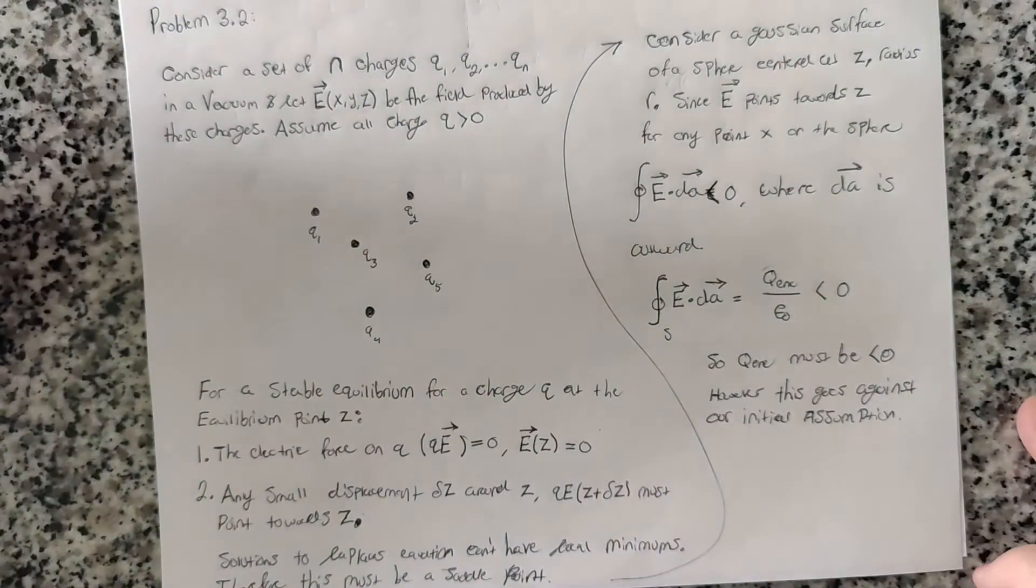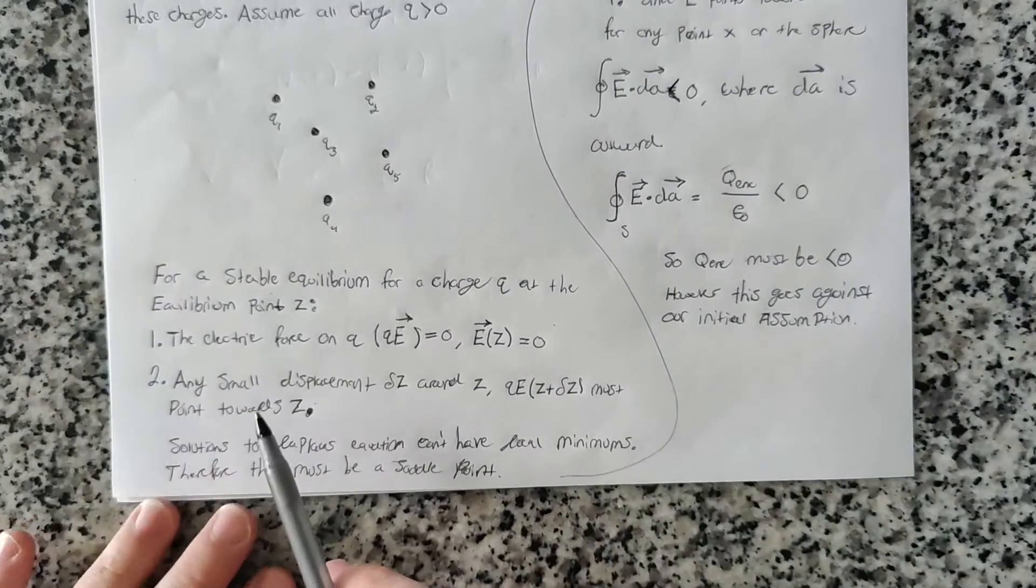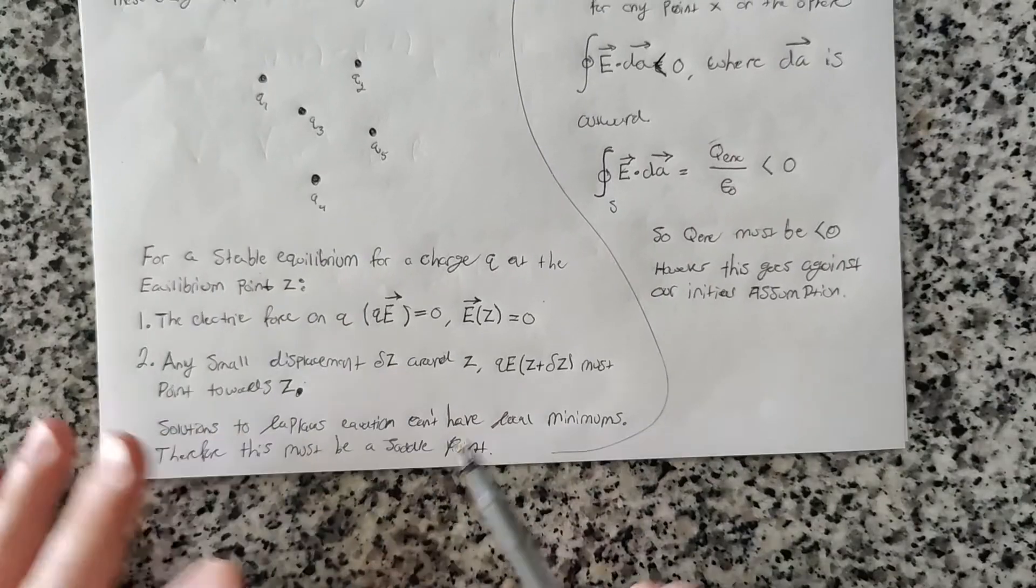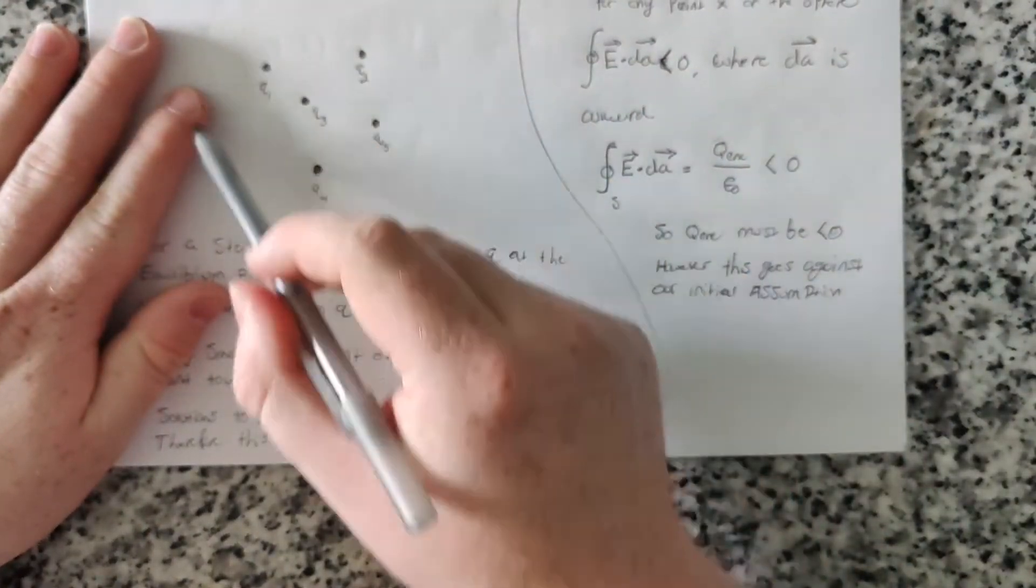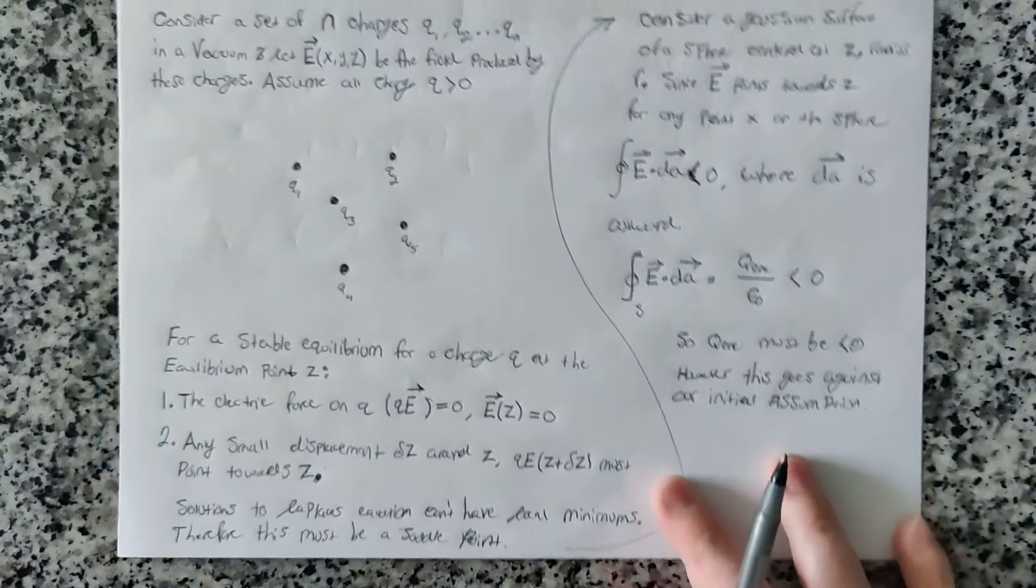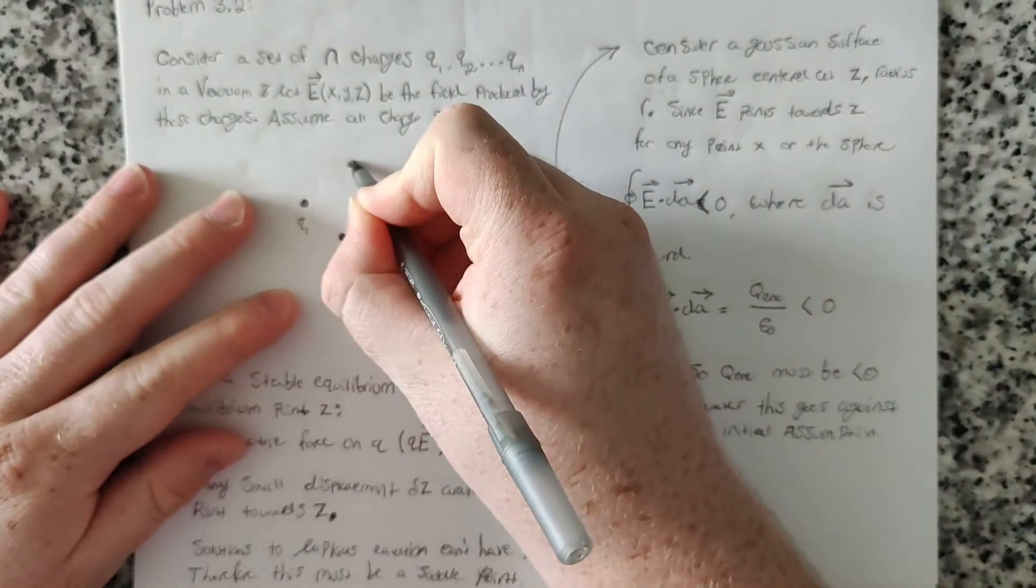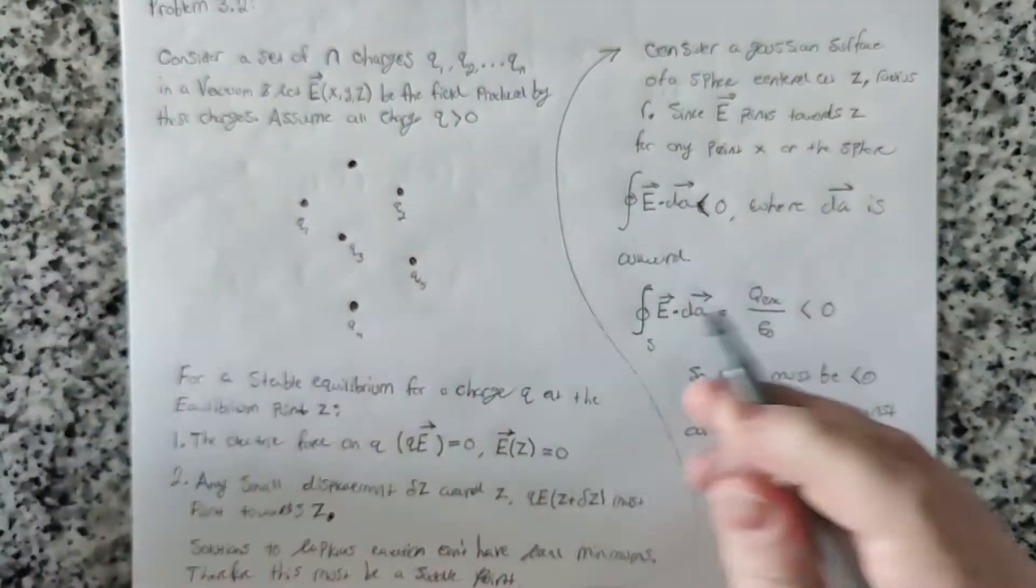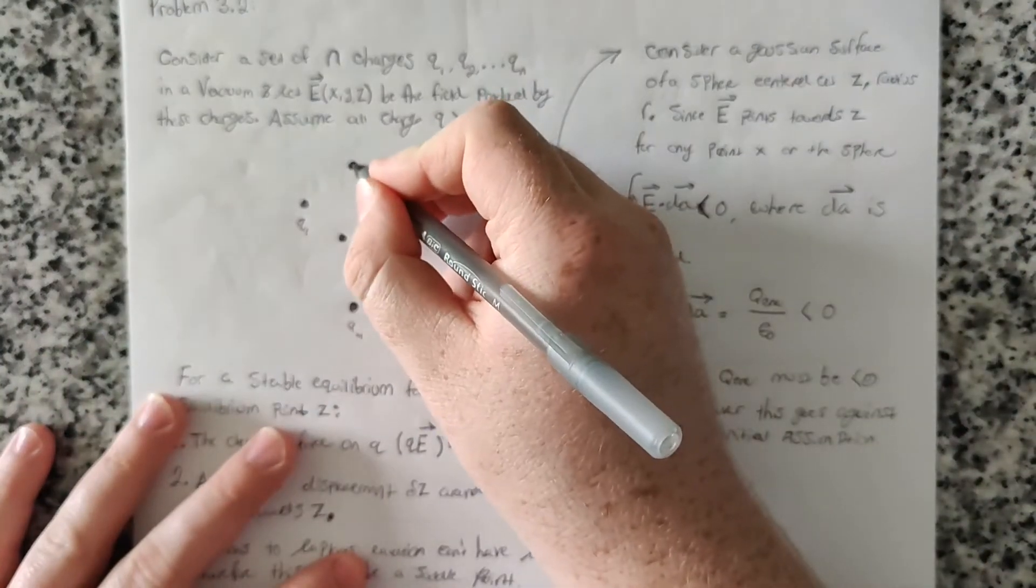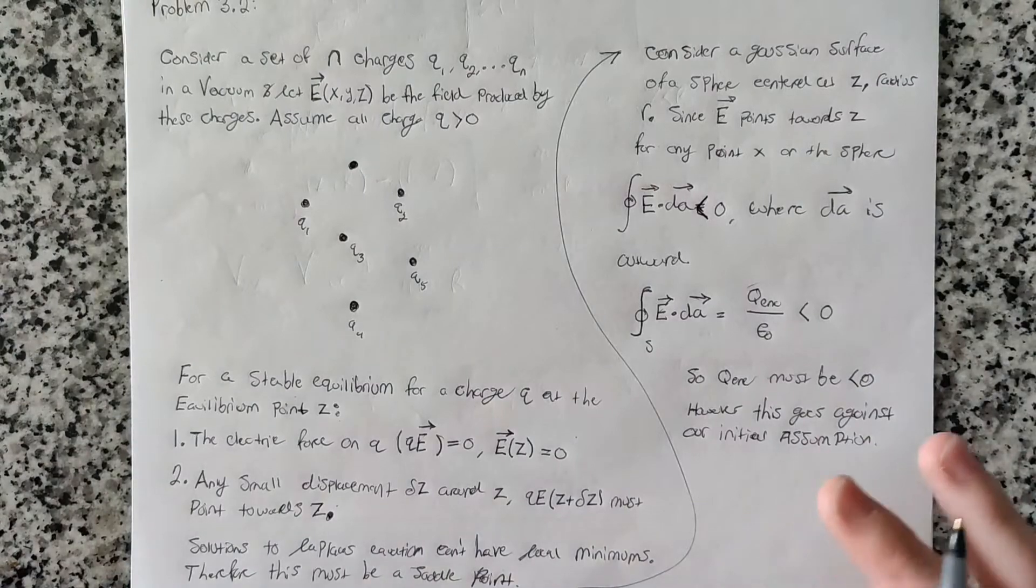What do we mean by stable equilibrium? A stable equilibrium means that if we have this configuration of charges, there should be some point Z out in space where the forces on a charge at this point would keep the charge in some sort of stable equilibrium, and it would just stay there.